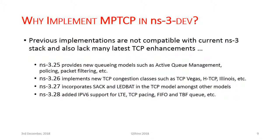Why implement MPTCP in NS3.25 and beyond? Previous implementations are not compatible with the current NS3 stack and lack many of the latest TCP enhancements. For example, NS3.25 provides new queuing models such as active queue management and packet filtering; NS3.26 provides new TCP congestion classes; NS3.27 provides selective acknowledgments; NS3.28 provides IPv6 support for LTE, TCP pacing, FIFO, and more. Implementing MPTCP in previous versions would mean missing out on these newer features and enhancements.